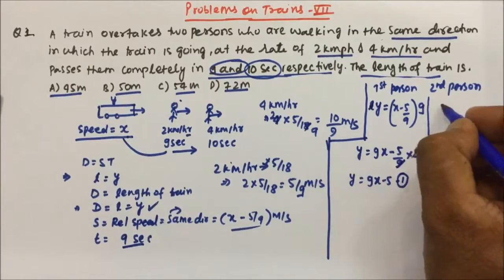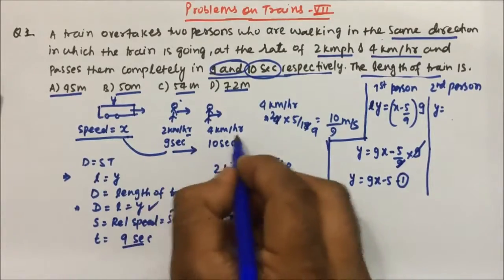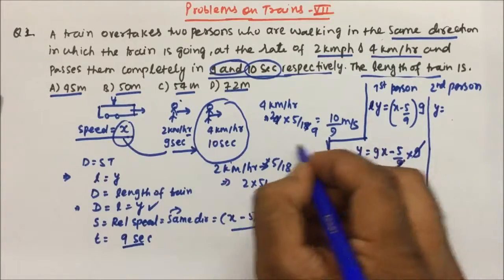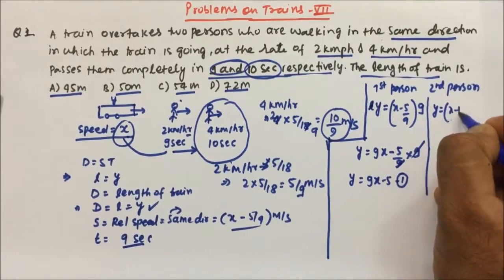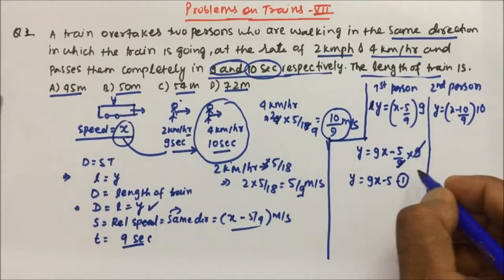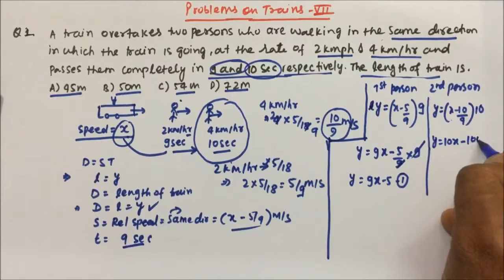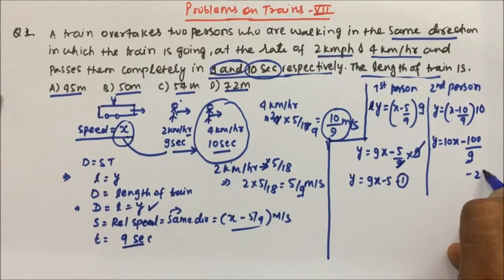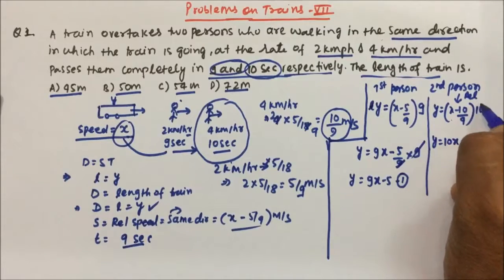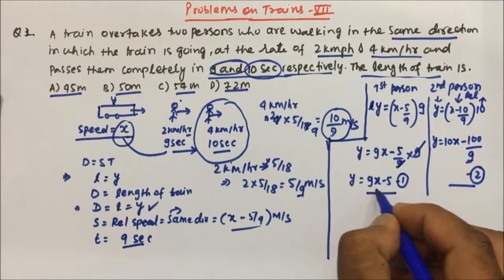For the second person, the distance is again y (length of train). The relative velocity is (x − 10/9) m/s and the time is 10 seconds. So: y = (x − 10/9) × 10 = 10x − 100/9. This is Equation 2.